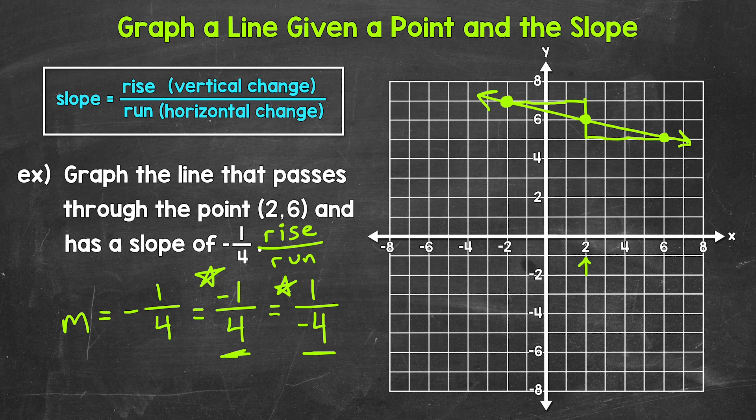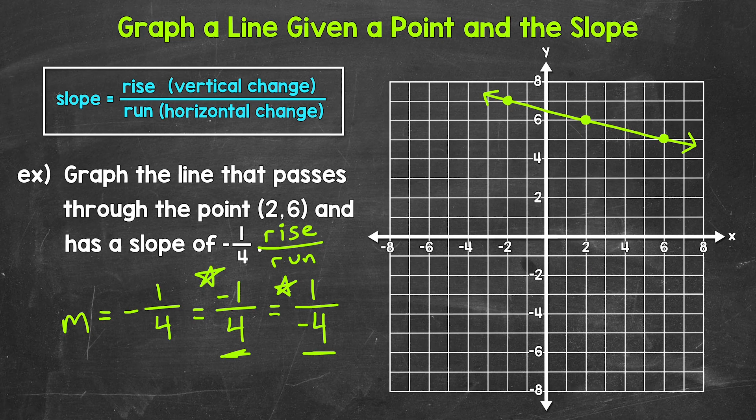And looking at this line, we can see that it is moving downward as it moves from left to right. We have a negative slope here. Now one more thing I want to do here is show the line without the marks from the rise and the run, just so we can see what that looks like. So here's our cleaned up graph of the line.